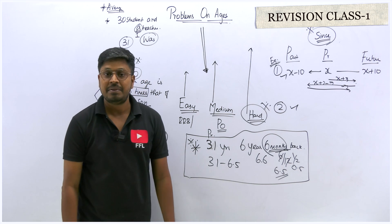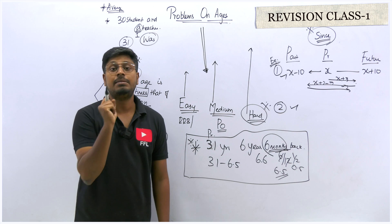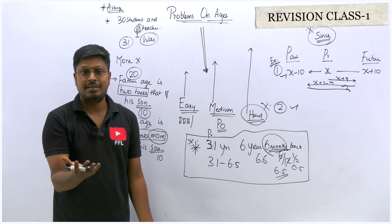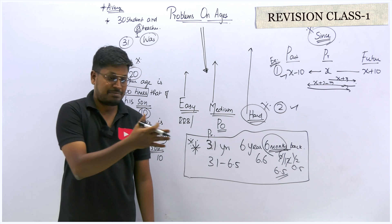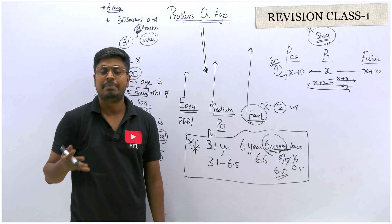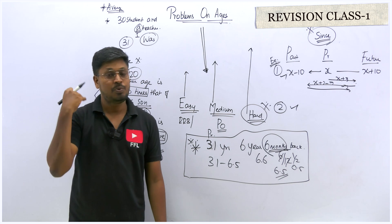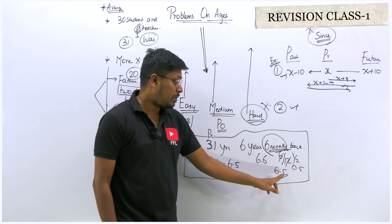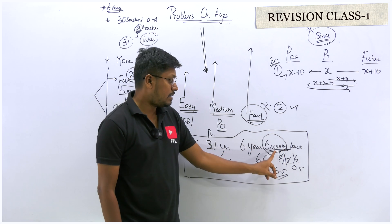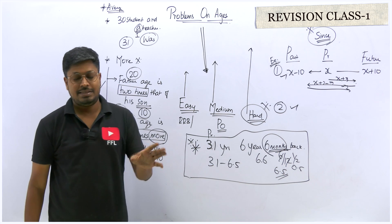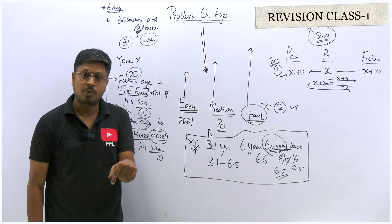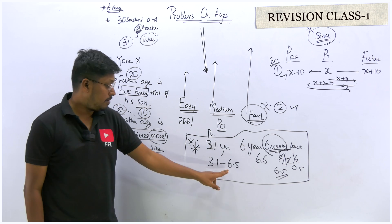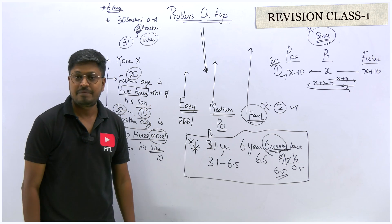This is most important because in recent years in bank exam prelims as well as some mains questions, the concept is based on months. Usually Problems on Ages are in the form of 'six years back the age ratio was 2:3', but in recent years questions are based on 'six years three months back the age was in the ratio 3:2'. Whenever you see months, divide by 12. Six months = 6/12 = 0.5, so six years six months = 6.5.